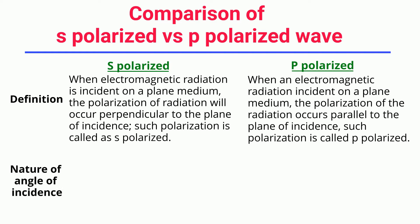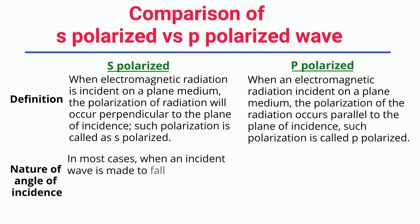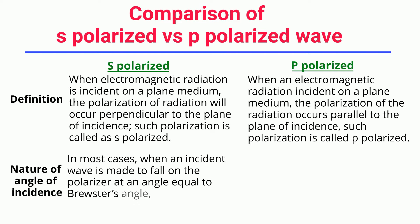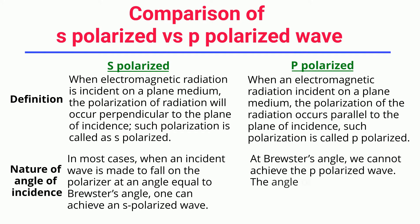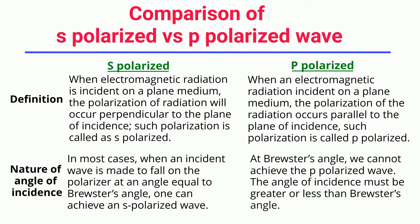Nature of Angle of Incidence: In most cases, when an incident wave is made to fall on the polarizer at an angle equal to Brewster's angle, one can achieve an S-Polarized wave. At Brewster's angle, one cannot achieve the P-Polarized wave.